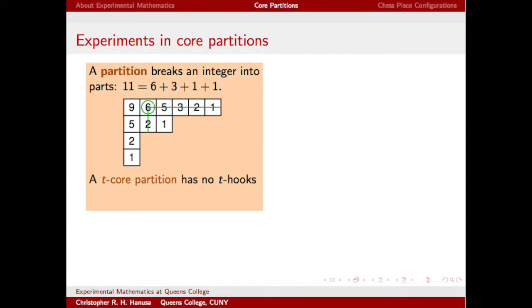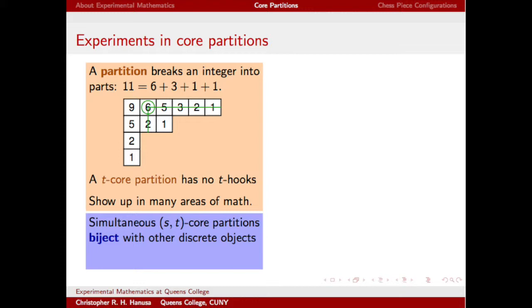A t-core partition is a partition whose diagram has no t's. For instance, this partition is a 4-core and a 7-core because we don't see any 4's or 7's in the numbers. Core partitions show up in abstract algebra, number theory, and representation theory, to name a few places where they arise. This family of objects is interesting because they're in bijection, or they can be paired up with many other families of discrete objects, and they have nice numerical properties.